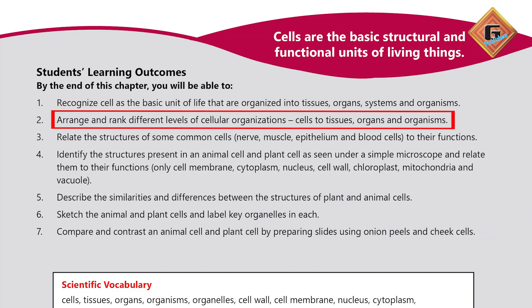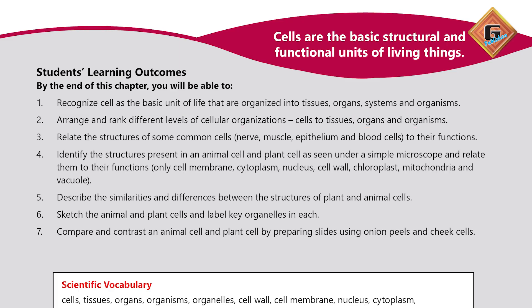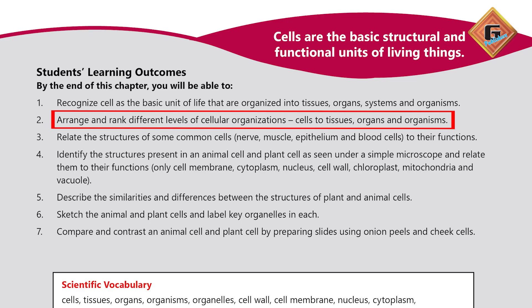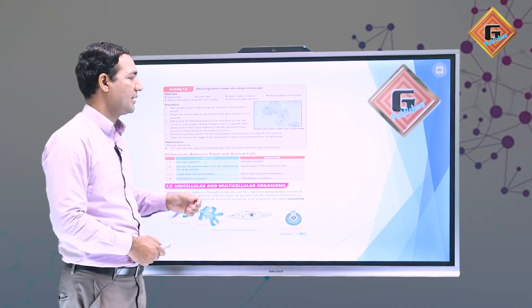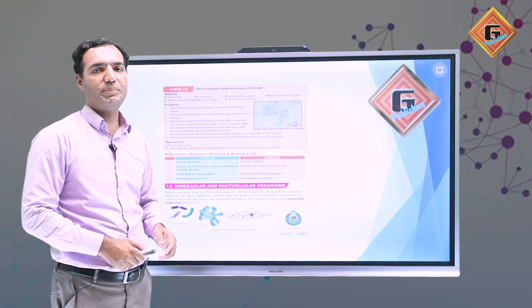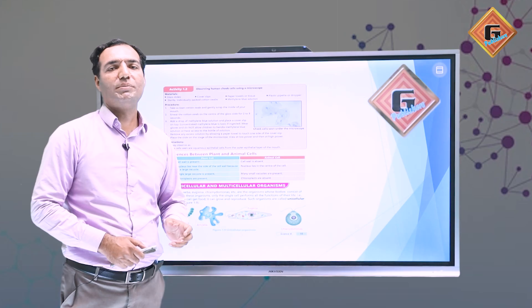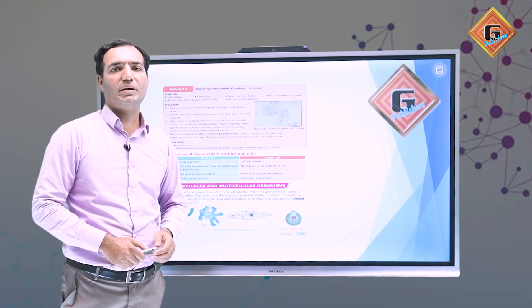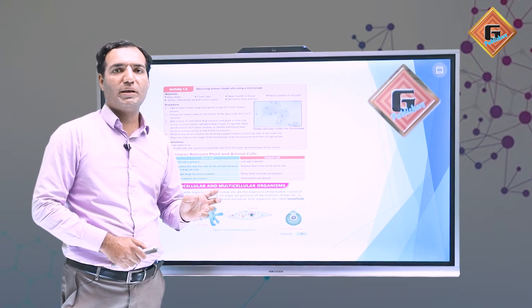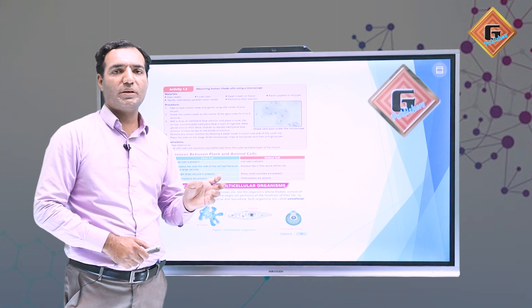We will study cells to tissues, organs, and organisms, and we will see how many types of cells there are. This is based on our previous lecture about cellular organization. We have discussed that the onion cell is a plant cell and we performed that activity.